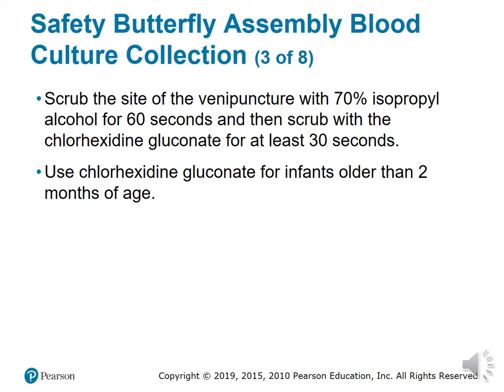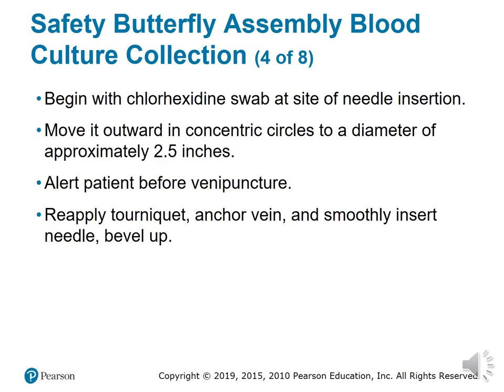Scrub the venipuncture site with 70% isopropanol for 60 seconds, then scrub with chlorhexidine for at least 30 seconds. Correction: alcohol is used for 60 seconds and chlorhexidine for 30 seconds. Chlorhexidine is used for infants older than two months. Begin the chlorhexidine swab at the needle insertion site and move outward in concentric circles to two and a half inches. Alert the patient before venipuncture, reapply tourniquet, anchor vein, and insert needle smoothly.